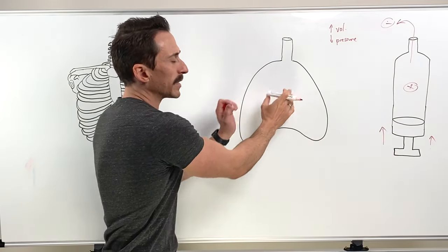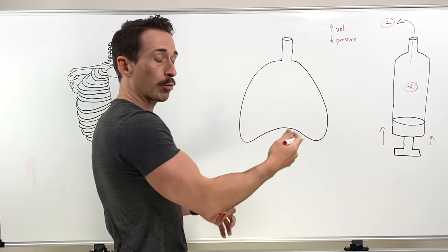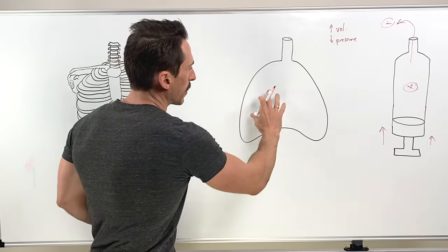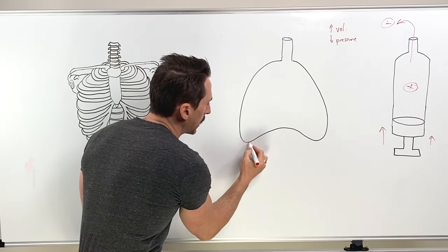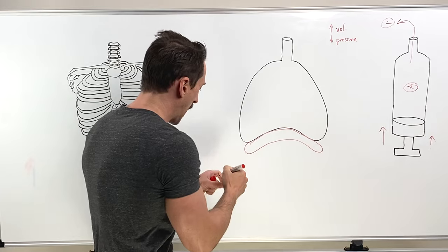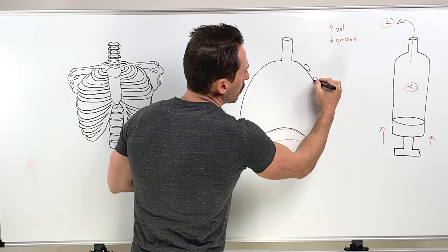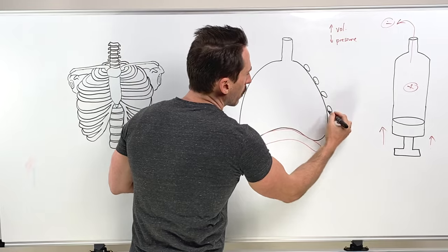All right. So let's move now to this example. What we've got here is the trachea and the bronchi, the thoracic cavity, the lungs, and down here the diaphragm.